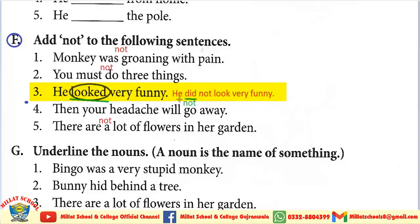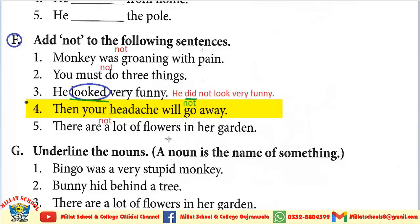Contracted form में होगा: 'He didn't look very funny.' Next: 'Your headache will not go away.' यहाँ मैंने green में 'not' लिखा है ताकि आपका इस sentence के साथ mix न हो। 'Will not' की contracted form है 'won't.' So: 'Your headache won't go away.' Next: 'There aren't a lot of flowers in her garden.'